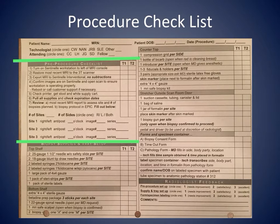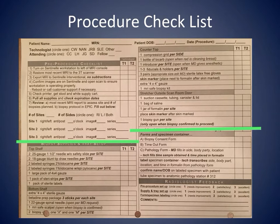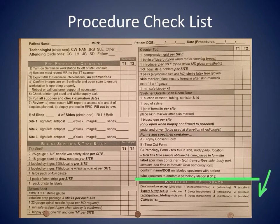A pre-procedure checklist ensures that the MR technologist has verified the information and prepared the supplies necessary for the procedure. The biopsy supplies and tray setup section is designed to ensure that necessary supplies are organized consistently for every procedure and that the technologist follows appropriate steps when opening these supplies. Instructions for the pathology form and specimen container are followed to avoid inter-procedure variability and possible errors. These sections are completed by the technologist during the procedure.